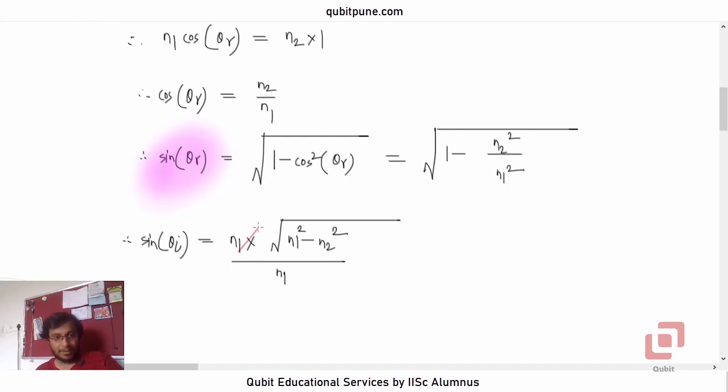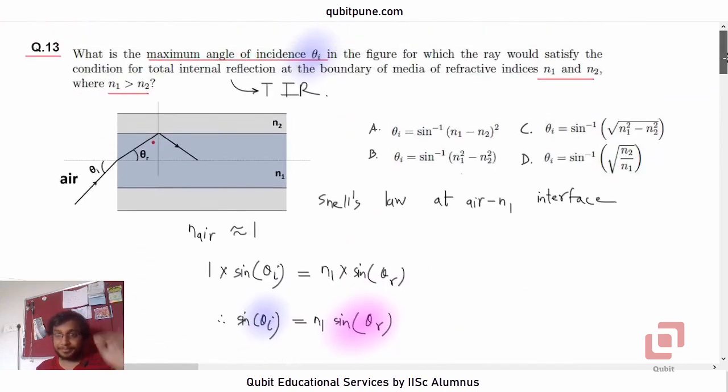And n1 n1 will get cancelled, so sine of theta_i or rather theta_i will be sine inverse of root of n1 squared minus n2 squared. Do we have that option? There is only one option or there are two options having root and it is option C. So question 13, option C.